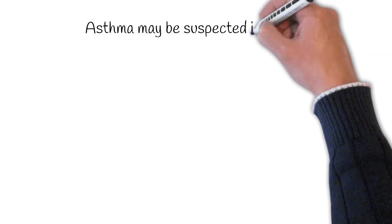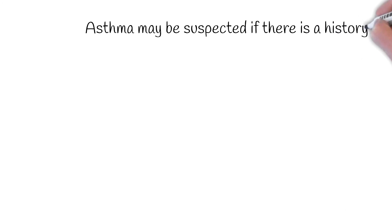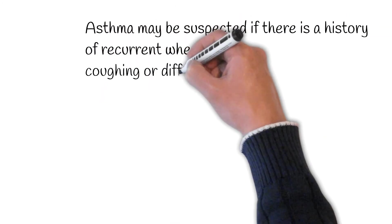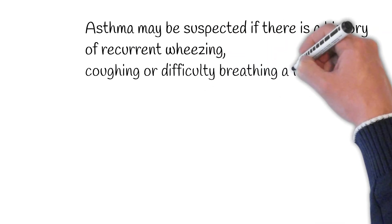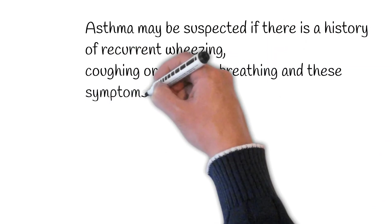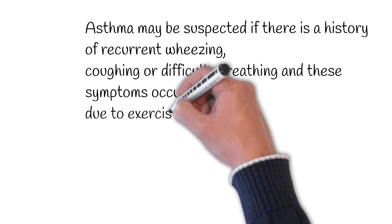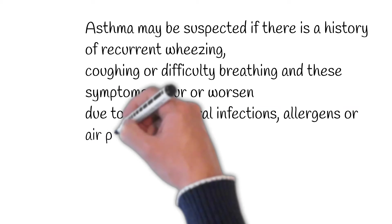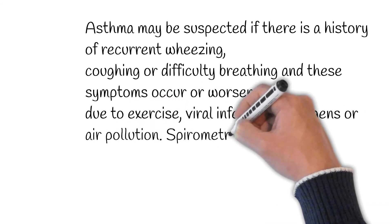Asthma is an obstructive lung disease. Prevention: The evidence for the effectiveness of measures to prevent the development of asthma is weak. The World Health Organization recommends decreasing risk factors such as tobacco smoke, air pollution, chemical irritants including perfume, and the number of lower respiratory infections. There is no cure for asthma. Symptoms can typically be improved.